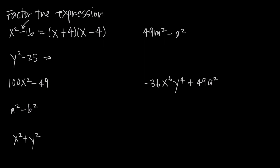We do the same thing with the next example. What do we have to multiply together to get y squared, or in other words, what's the square root of y squared? That's just y, so we go ahead and put our y's here. Then the square root of 25 is 5, so we put our 5s in place and add one and subtract the other. We could do that because y squared was a perfect square, 25 was a perfect square, and we had subtraction in between them, so we can factor this as the difference of squares.